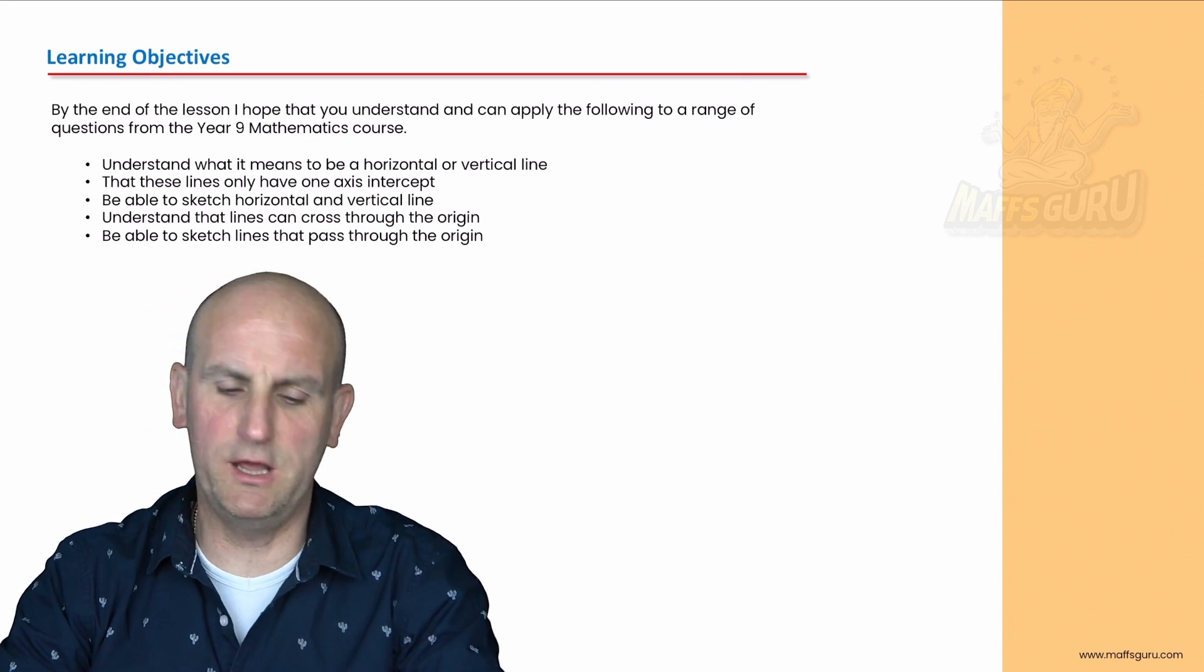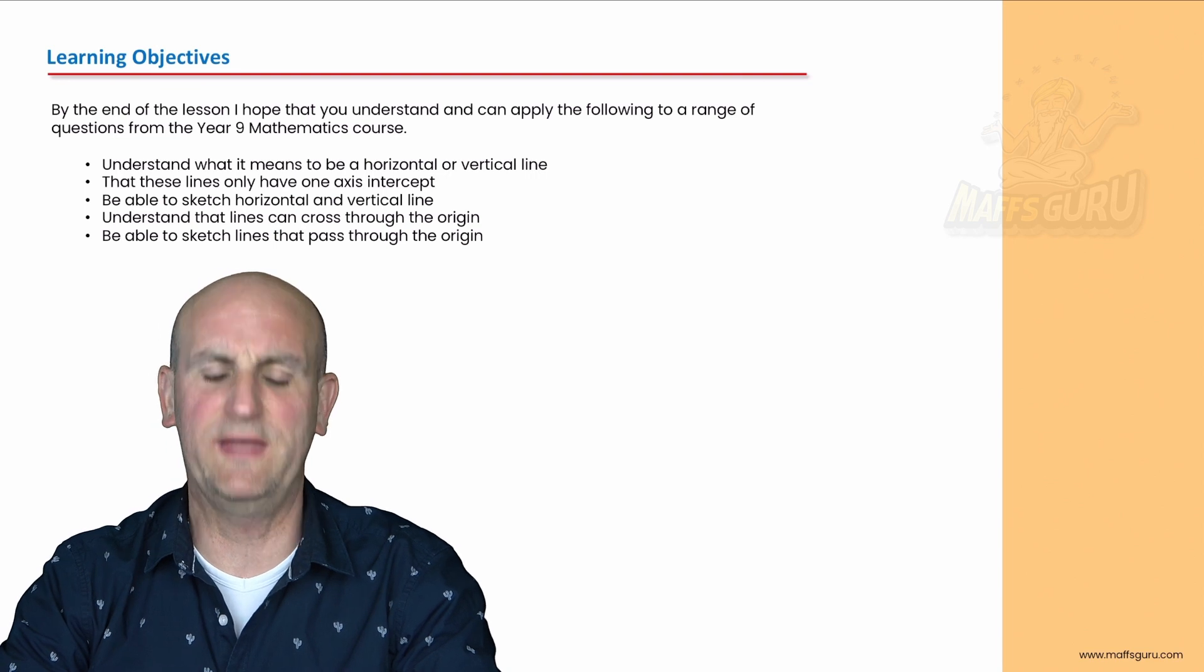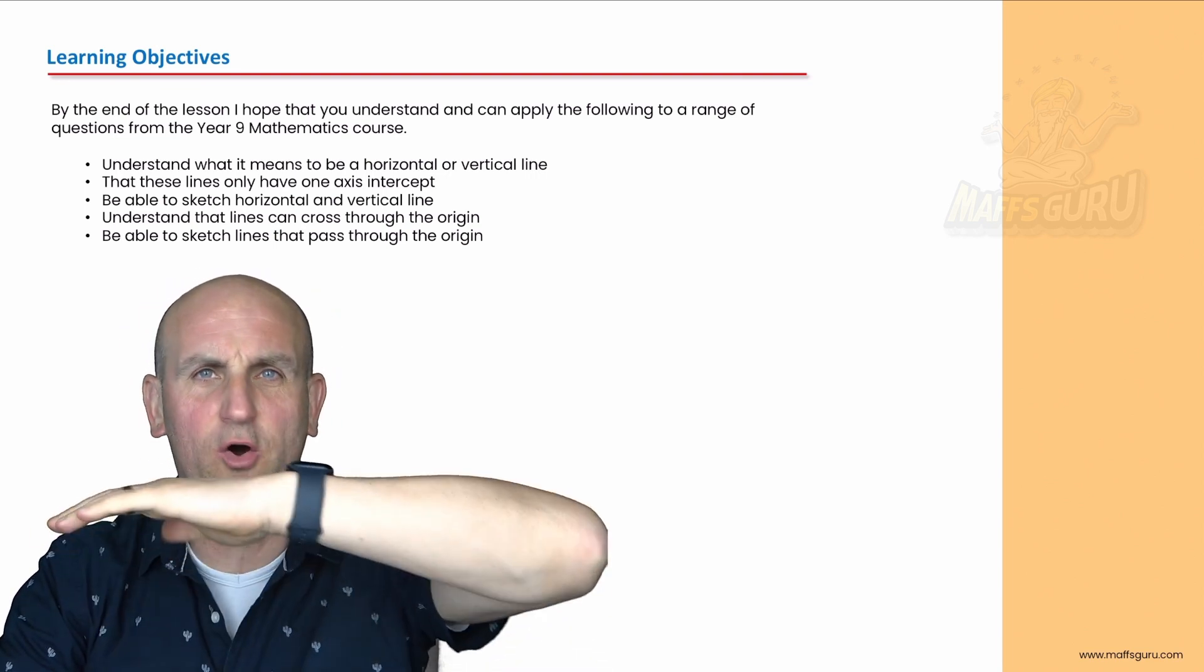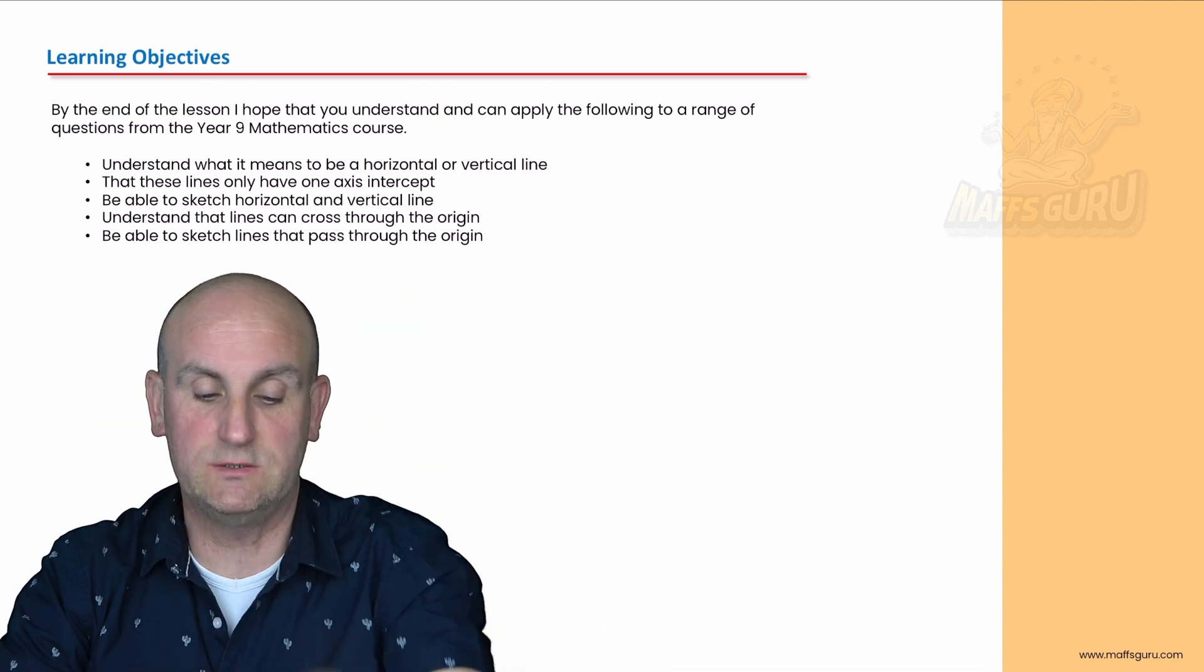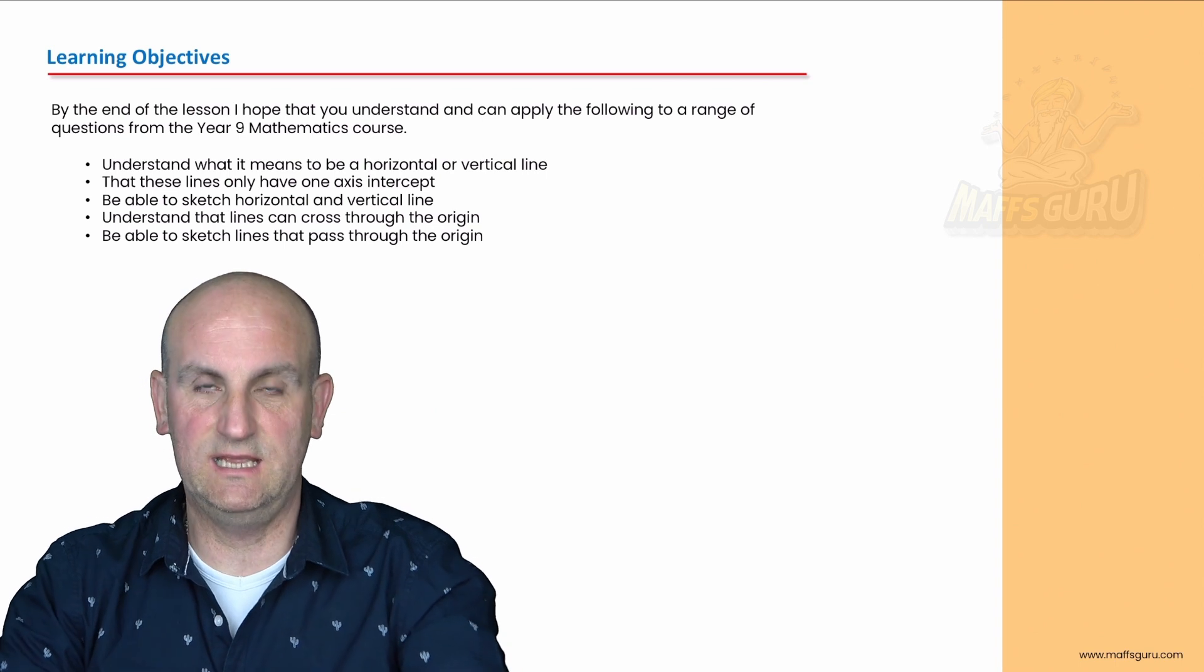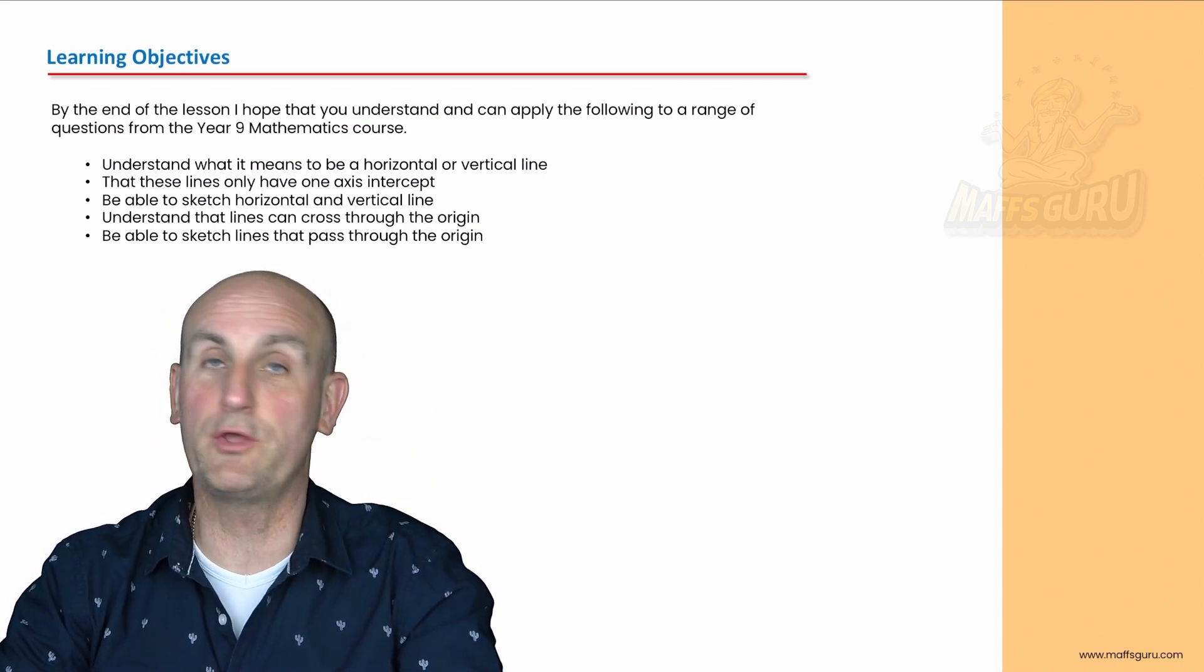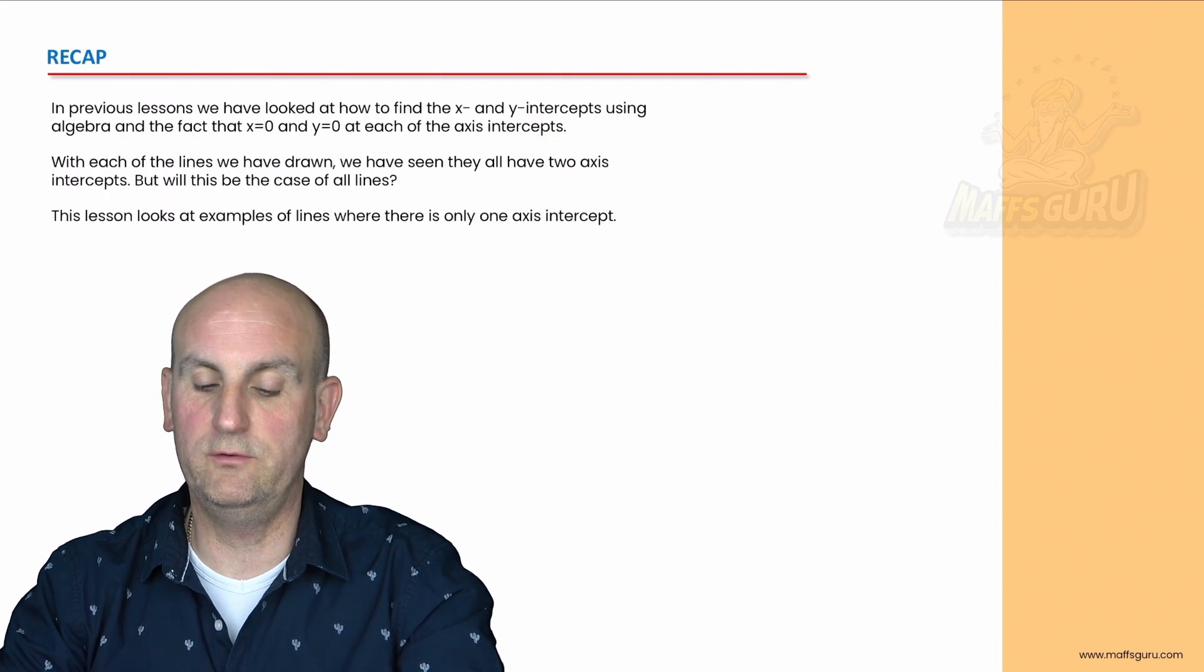So what are our learning objectives? Understand what it means to be a horizontal or vertical line, that these lines only have one axis intercept. Be able to sketch these things, and a sketch is very different from a plot. Understand that lines can cross through the origin and be able to sketch lines that pass through the origin.